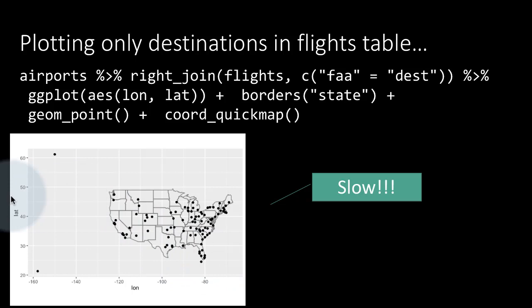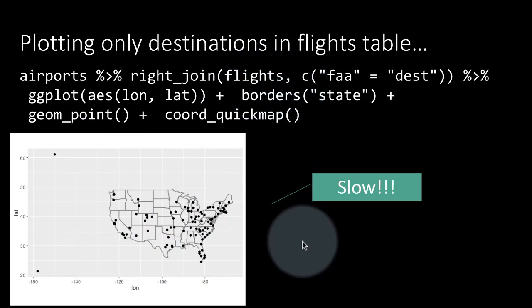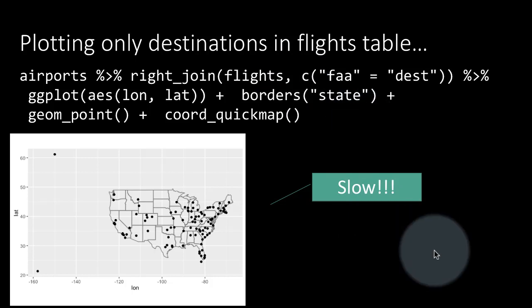So for example, if you take a look at the Miami airport, that is probably the Miami airport down here. So it is showing only one point, but out of the 337,000 flights that are in the flights table, several thousand of them must have gone to Miami. So each point here is actually the result of several thousand overplottings. So that is why we are, instead of plotting only the 100 airports, we are actually plotting 337,000 different points. So we can make this code far more efficient.